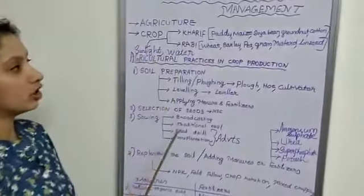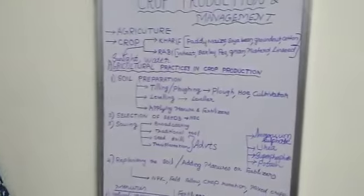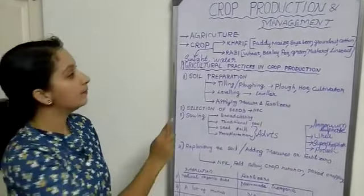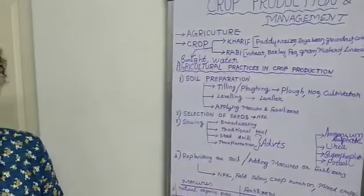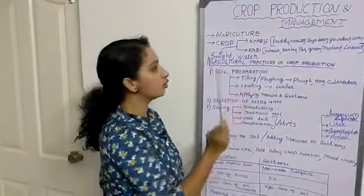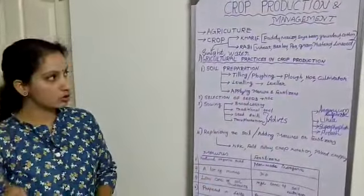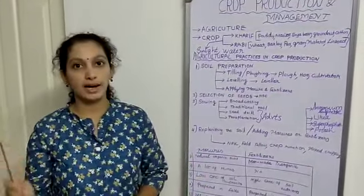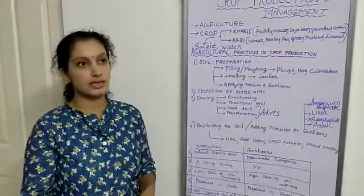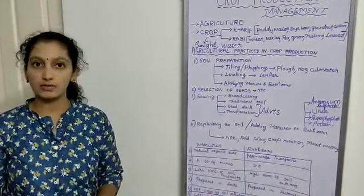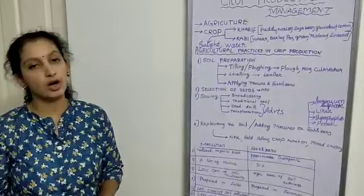The second one is rabi crops. Rabi crops require more sunlight and less water. So you can imagine which months they are grown: from October till March or April. That means we sow the seed in September and do the harvesting in March or April.